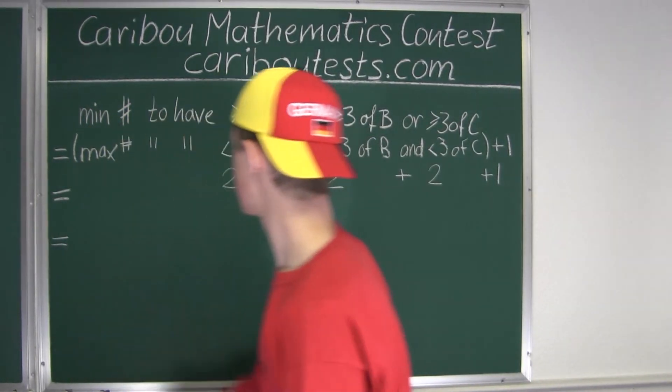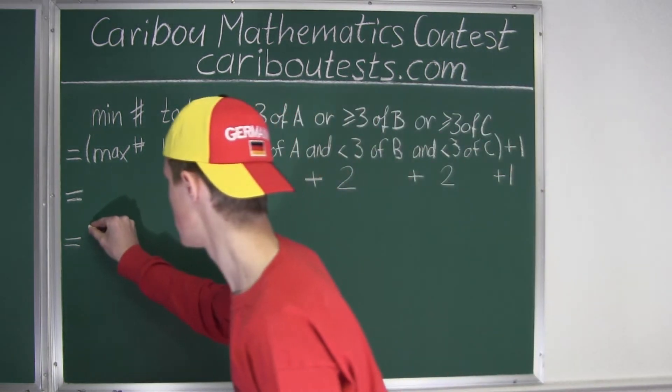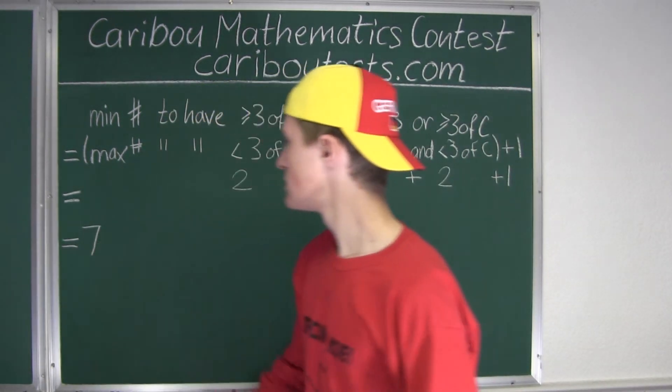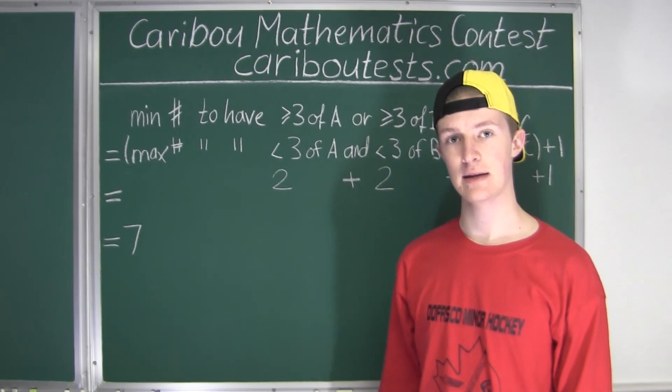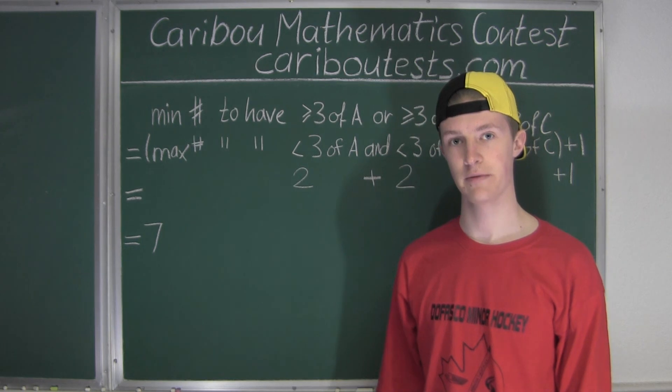So if we add this up, we have two plus two plus two plus one is equal to seven. So the minimum number of candies that you have to pull out of the bag to be sure that at least three of one type of candies are on the table is seven.